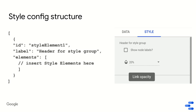Similarly to the data config, the style config has style sections that group style elements together. Each section has an ID, a label serving as the header for that grouping of style elements, and then a list of style elements. You can have multiple style sections within the style config.